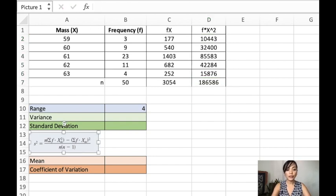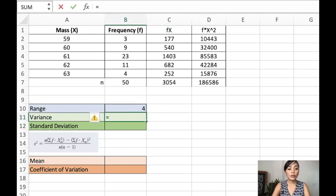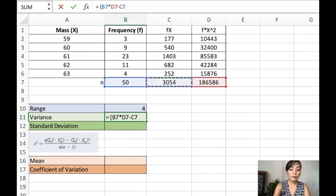Now let's compute for the variance. This is the formula of the variance. Let's solve variance using this formula. I'll just put in parentheses, 50 multiplied to the sum of the f x squared, and then we subtract it to the sum of the fx. But remember, we have to square that.